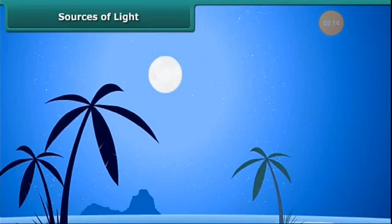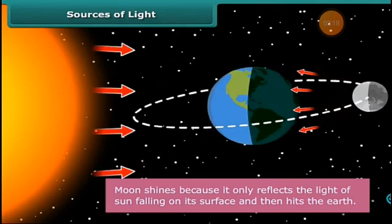The moon is not a natural source of light. It does not have its own light. It only reflects the sun's light on its surface, which then hits the earth, due to which it appears shining when seen from the earth.